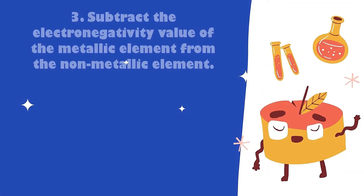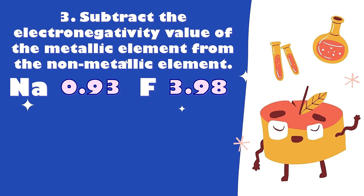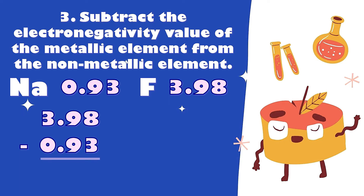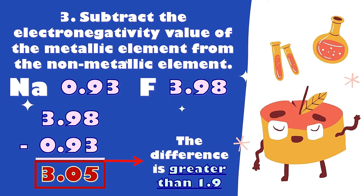Third, subtract the electronegativity value of the metallic element from the non-metallic element. The electronegativity of sodium is 0.93, while fluorine is 3.98. Subtracting: 3.98 minus 0.93 equals 3.05. Since 3.05 is greater than 1.9, sodium fluoride is an example of an ionic bond.